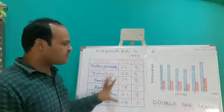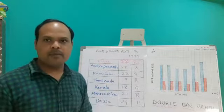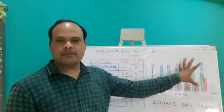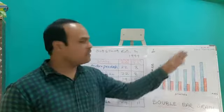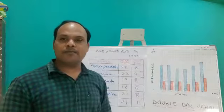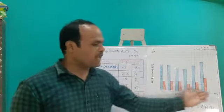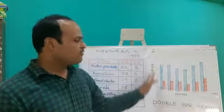We have to represent this data using double bar graph. For that, I have taken a double bar graph on the graph paper. So what are the steps we need to follow? First, we have to take x-axis and y-axis.